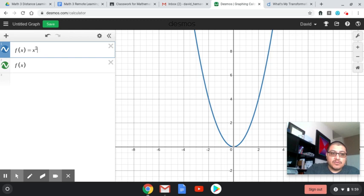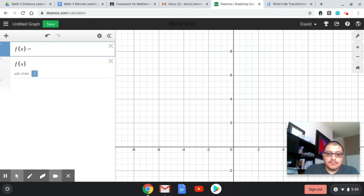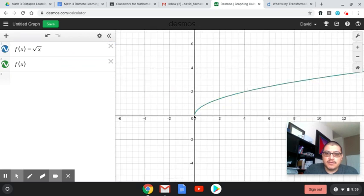is what happens if you don't use the... if I write square root of x. Well, look at this. The vertex, or not the vertex, the starting point, is at 0, 0.